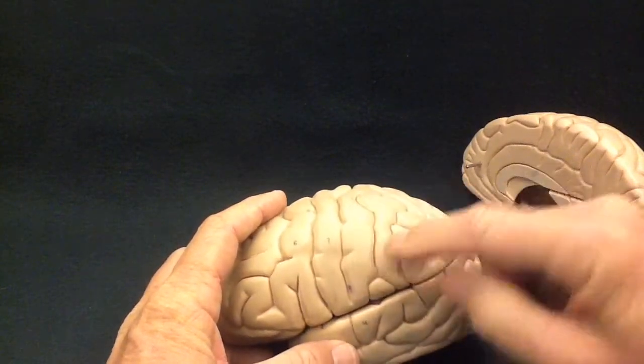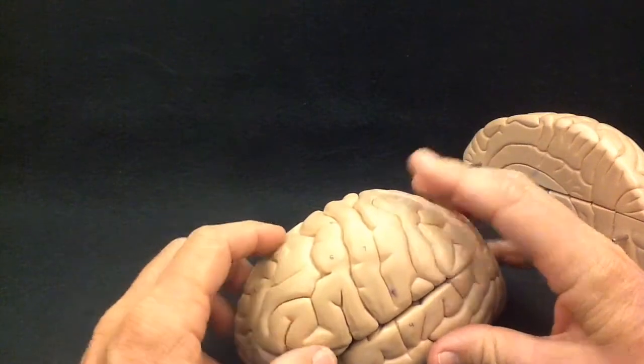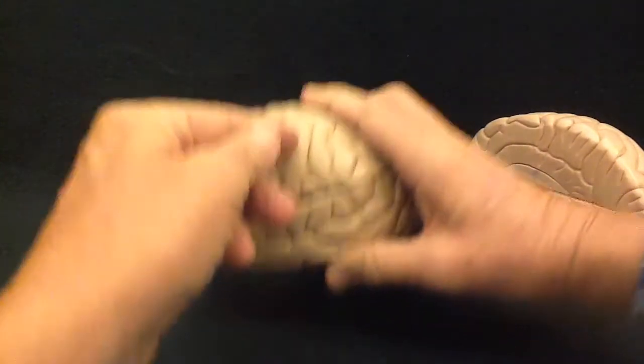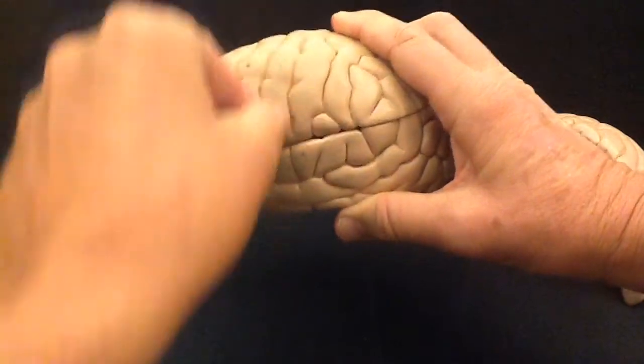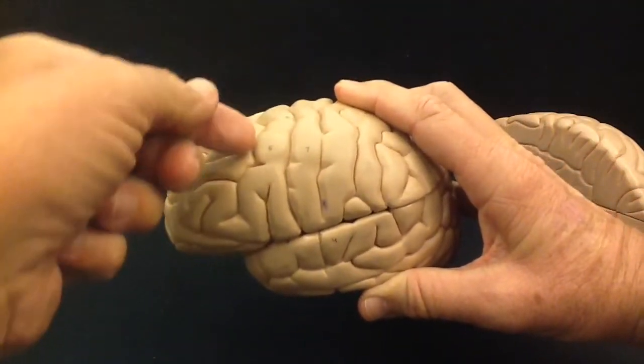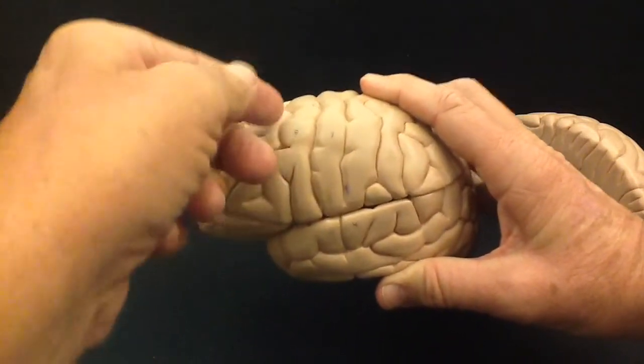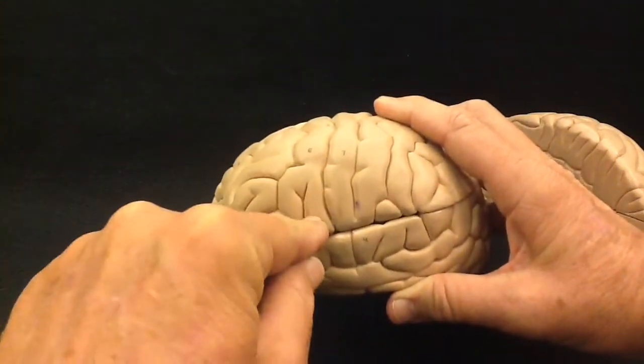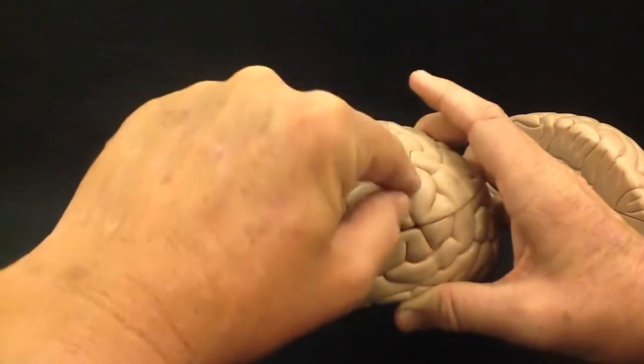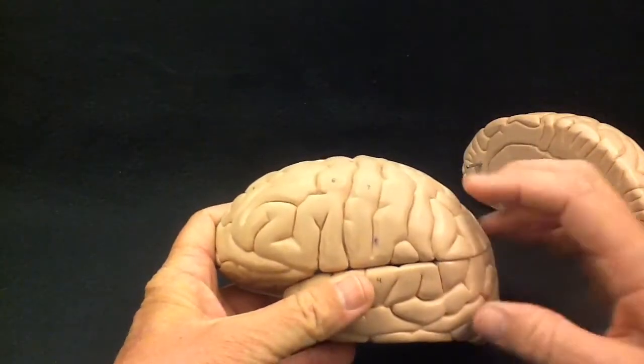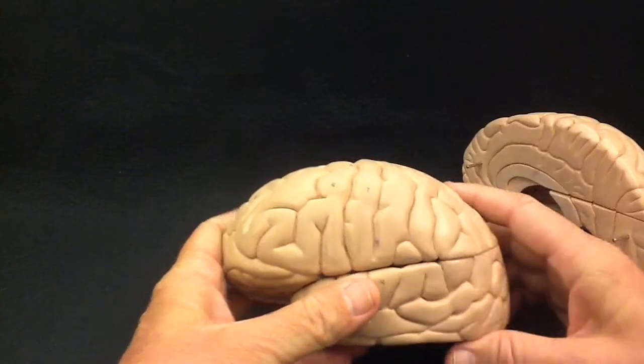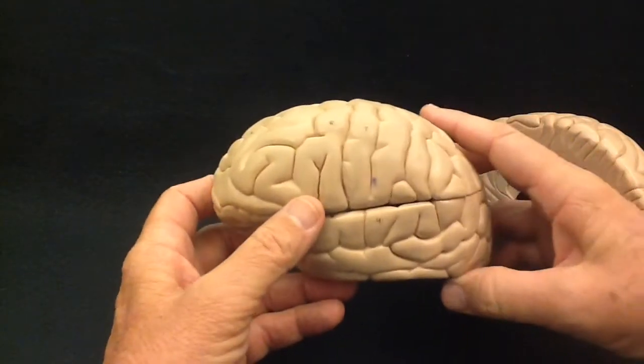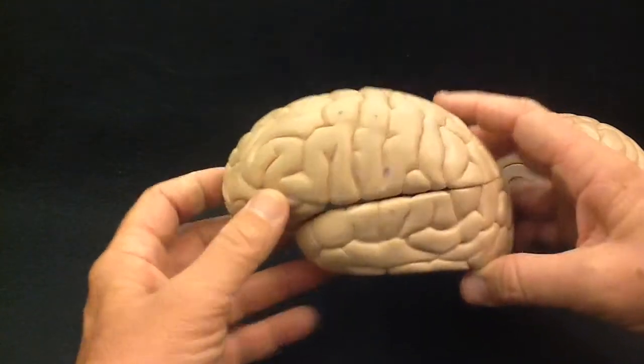We have a general name for all of this folding that you see over the surface of the cerebrum. The ridges here, like this one or this one, all of these little ridges have little valleys between them. A ridge here is called a gyrus, or some people pronounce it gyrus. All of these folds that you see, every single one is a gyrus. And each little valley is referred to as a sulcus. So there are many, many gyri, plural, and many, many sulci, plural, over the surface of the cerebrum.